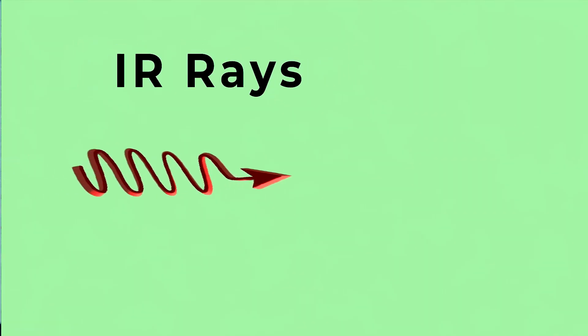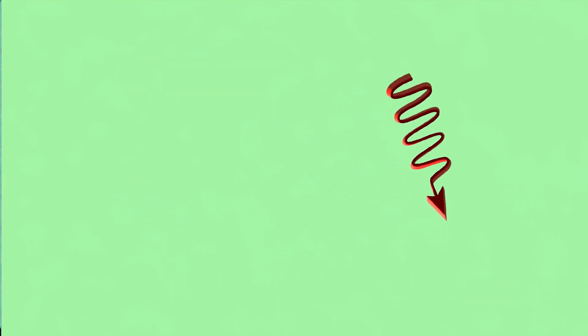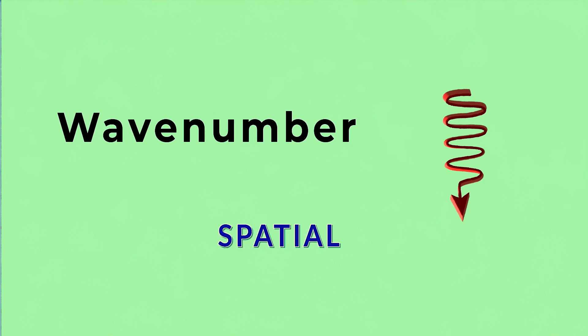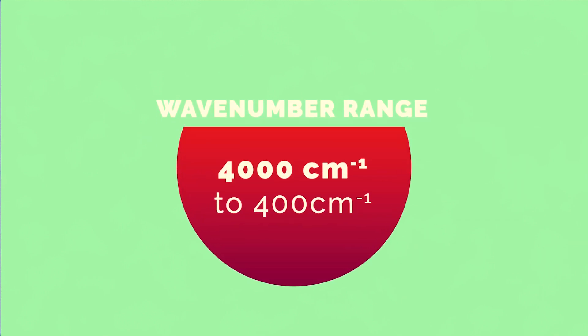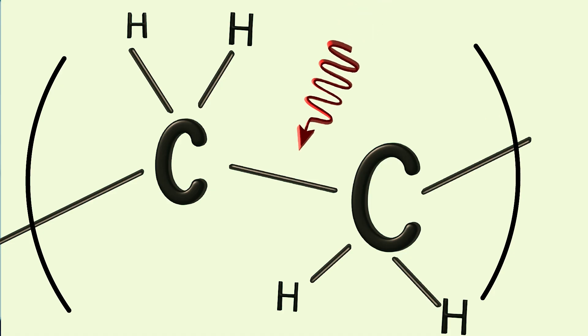This method uses IR rays which are exposed onto the plastic. The IR rays are characterized by what is called wavenumber, which is nothing but the spatial frequency of the rays. The wavenumber range for this method is between 4000 per centimeter to 400 per centimeter. As the IR rays are directed towards the plastic sample, they interact with the molecular bonds that make up the plastic.